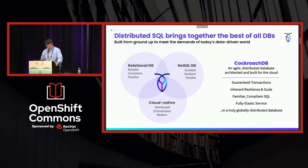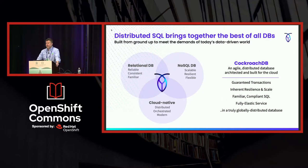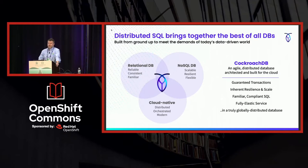What is CockroachDB? CockroachDB is a distributed SQL database. We bring together the best of the relational RDBMS world and the best of the NoSQL world in a database that allows you to run system-of-record workloads in a Kubernetes-native environment.